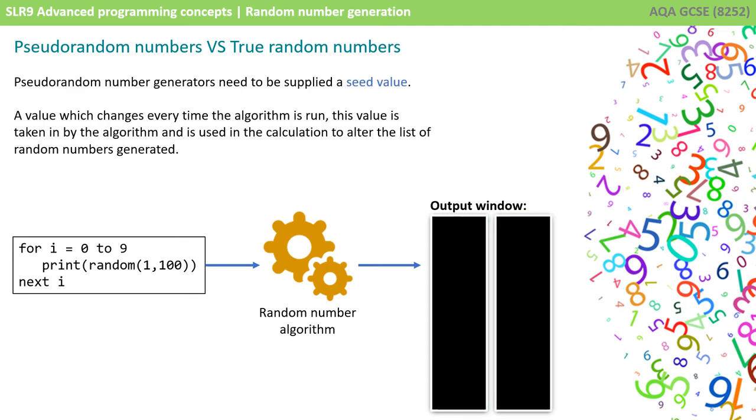Pseudorandom number generators need to be supplied with what we call a seed value. Now this is a value which changes every time the algorithm is run. The value is taken in or plugged into the random number algorithm, and is then used in the calculation to alter the list of random numbers generated.